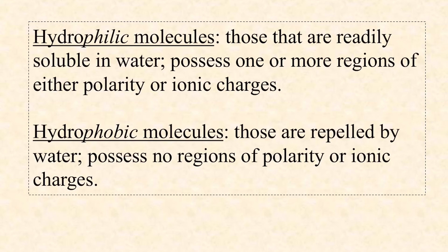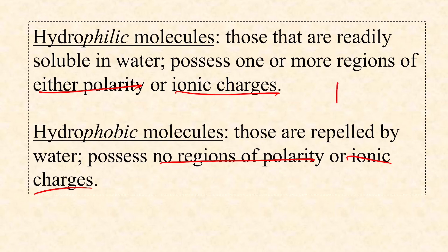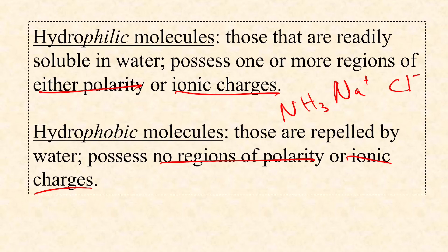Hydrophilic molecules are those that have one or more regions of either polarity or full ionic charges, because water molecules and their partial charges love to interact with ions. A hydrophobic molecule, on the other hand, has no regions of polarity and no ionic charges. For example, sodium chloride is very hydrophilic and soluble because of its full ionic charges. Ammonia (NH3) is also hydrophilic because of the polar covalent bonds between nitrogen and hydrogen. But methane has nothing to attract water, so it has very low solubility.